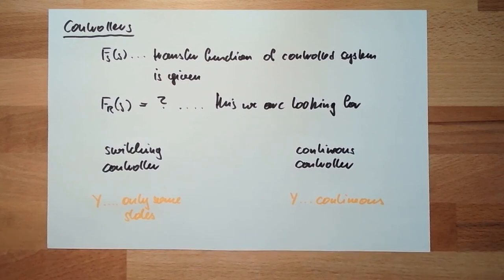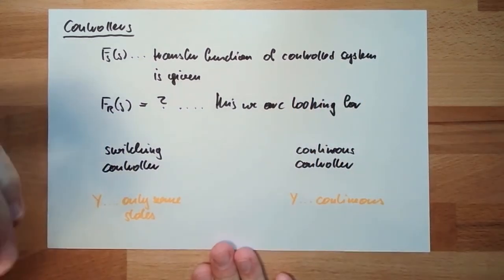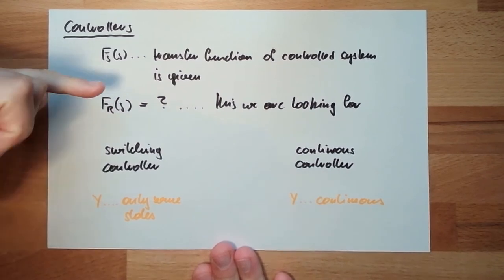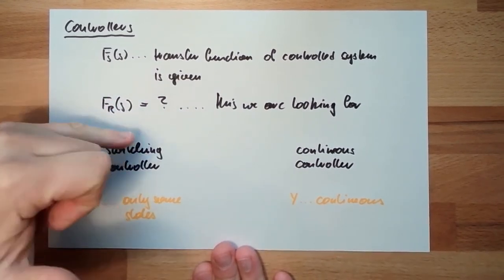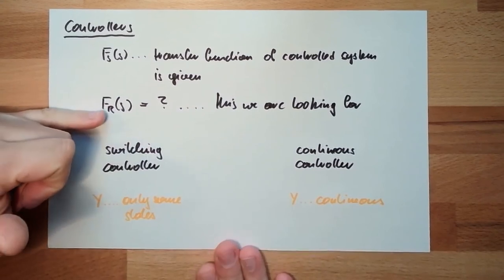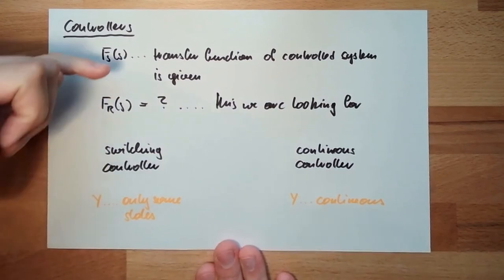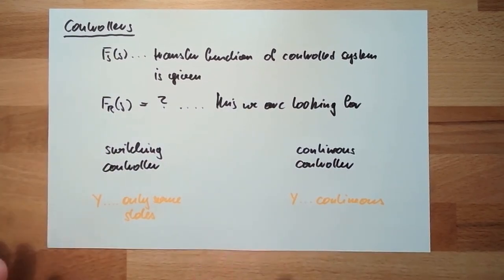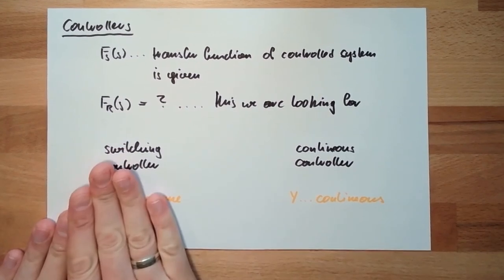Like I said, that's it for this video. I just want to mention that this system transfer function is given. The regulator controller transfer function we are looking for so that it fits to the system and that there are two types of controllers: switching controllers and continuous controllers.